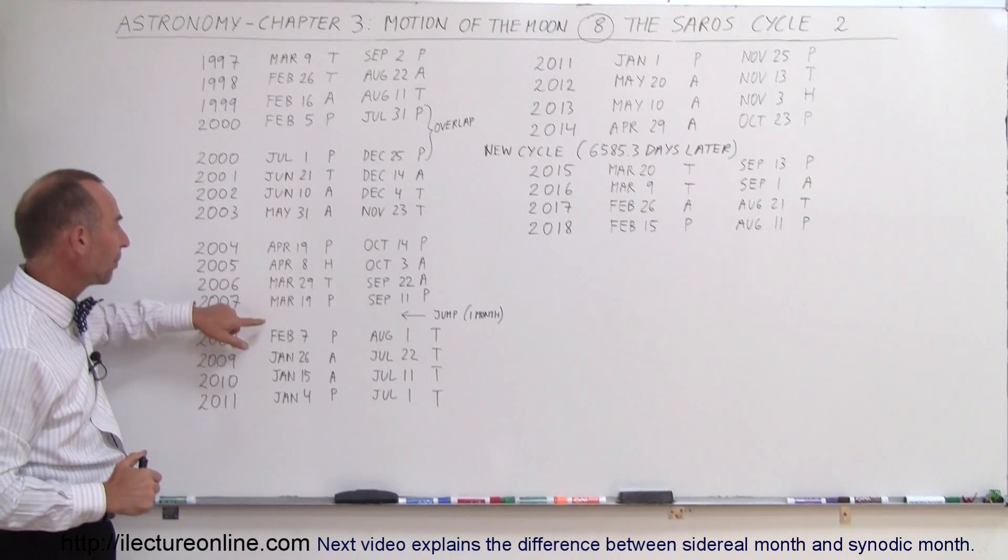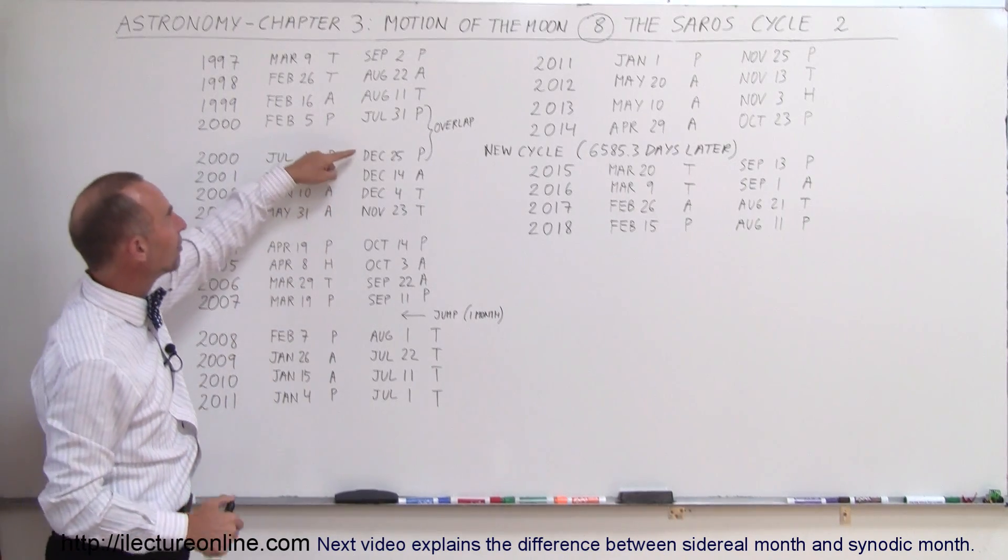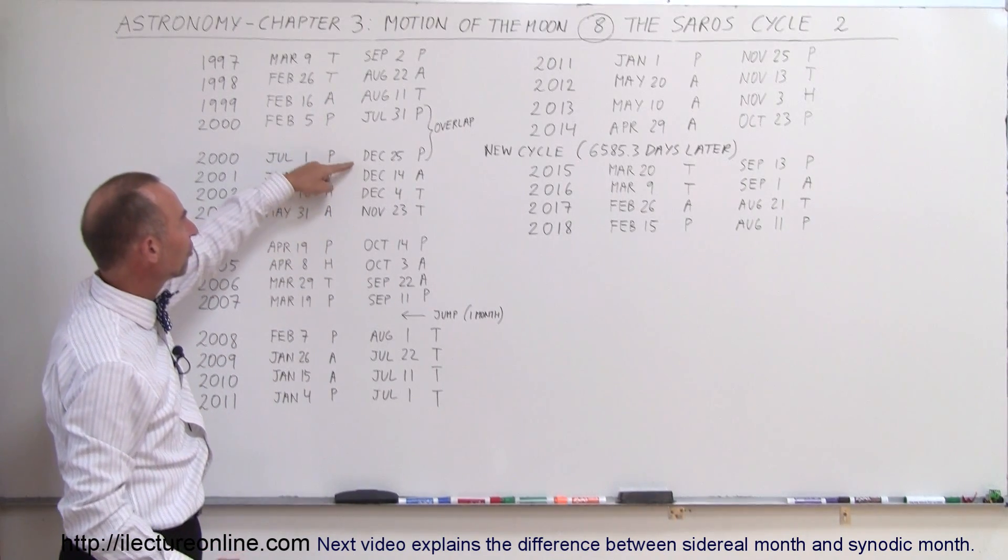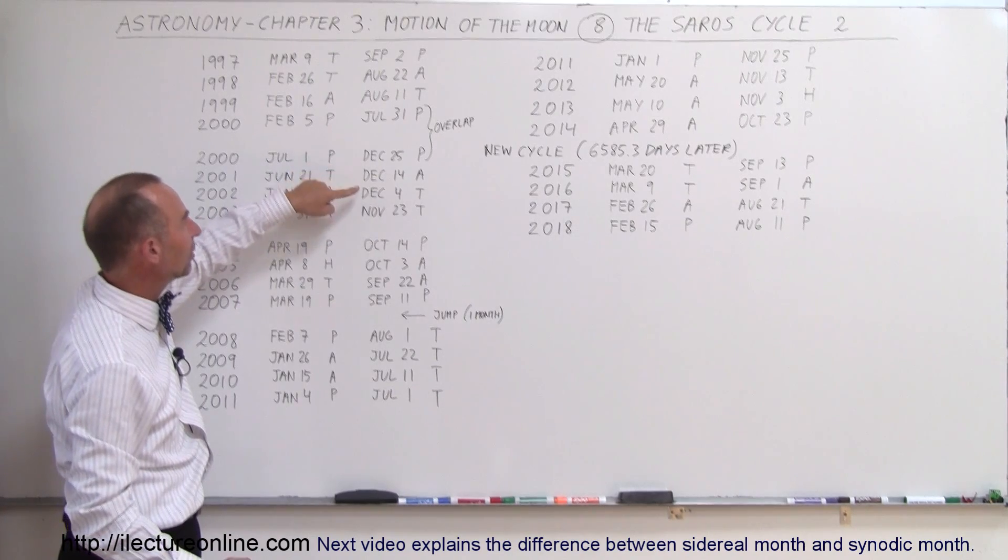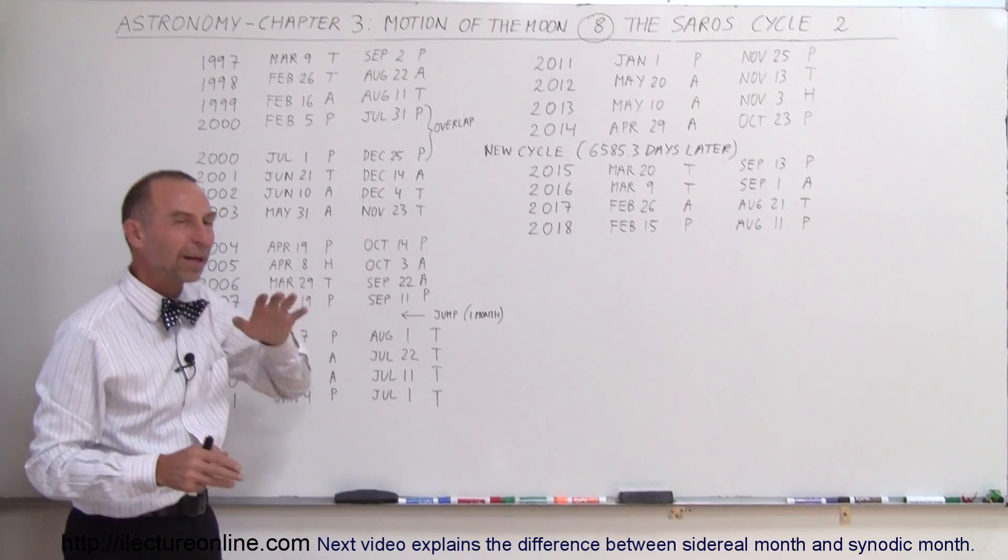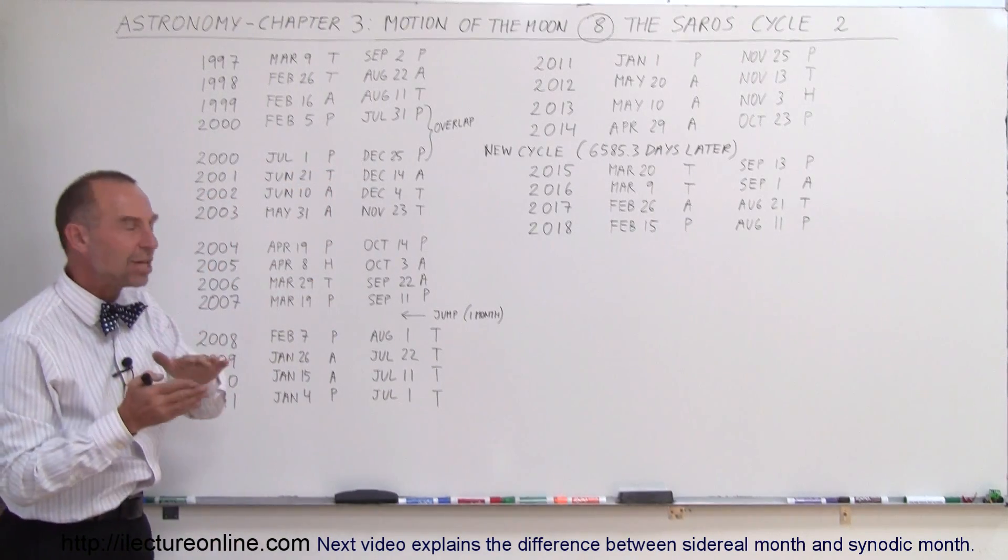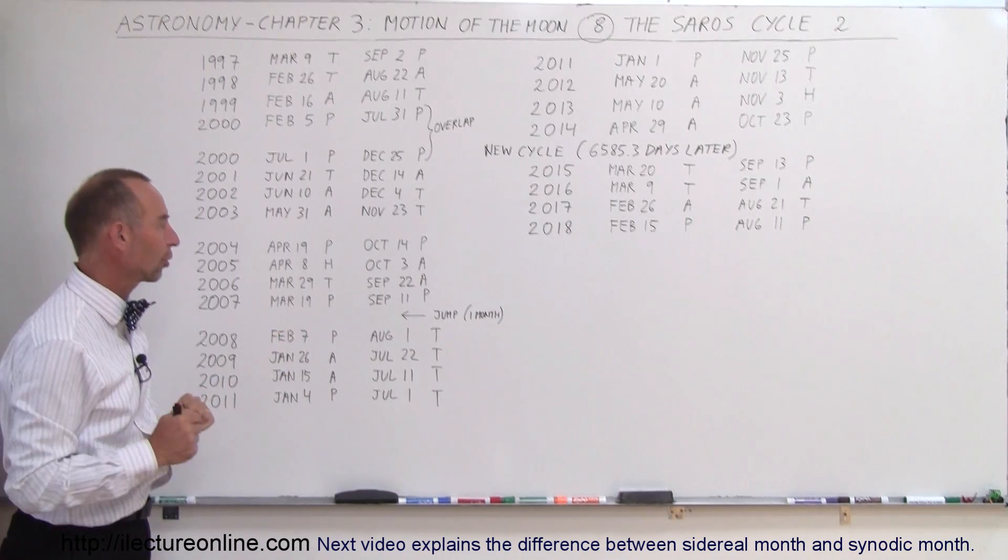Sometimes there is a jump. For example here, notice how every month there's about a 10 day difference, December 25th, December 14th, December 4th, November 23rd. There's about a 10-11 day shift every year as to when the solar eclipses occur.